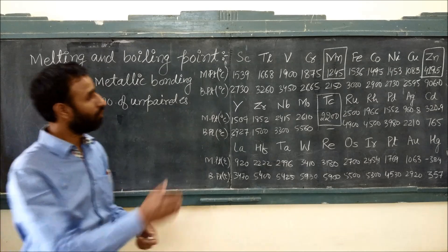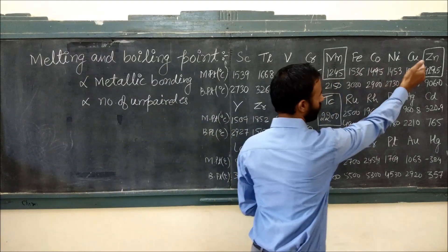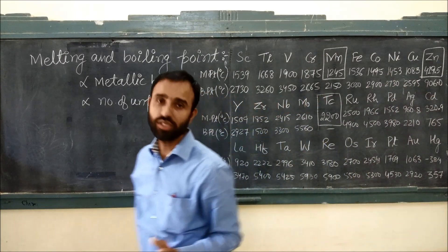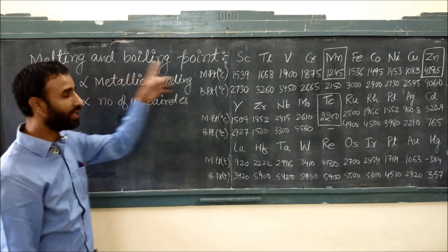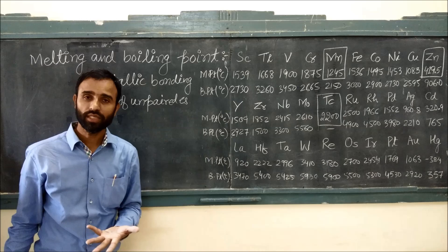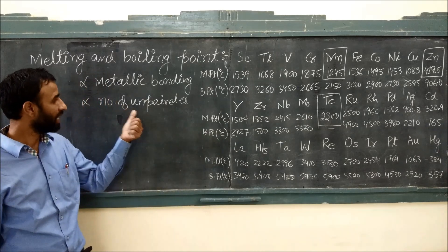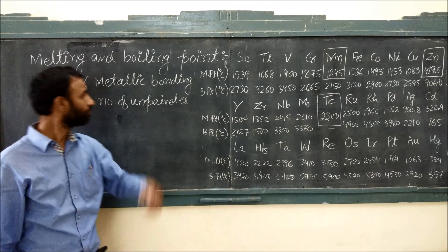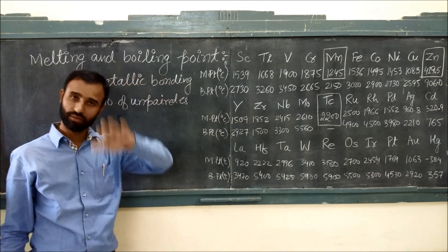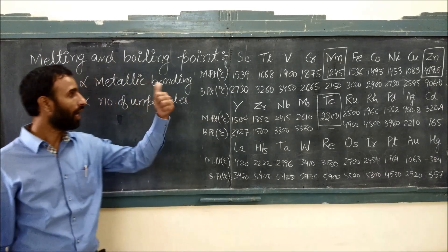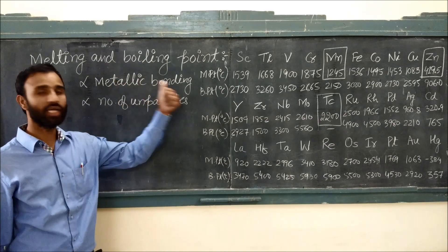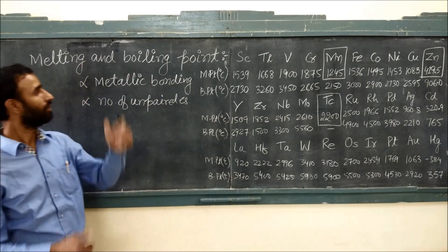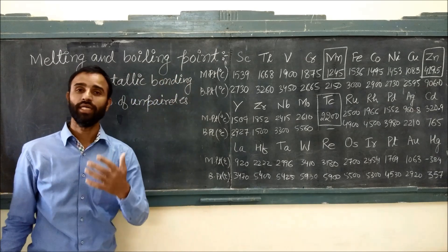But as pairing starts, the number of unpaired electrons decreases, and so do the melting and boiling points, because as unpaired electrons decrease, metallic bonding becomes weaker. And if metallic bonding weakens, melting and boiling point decreases.